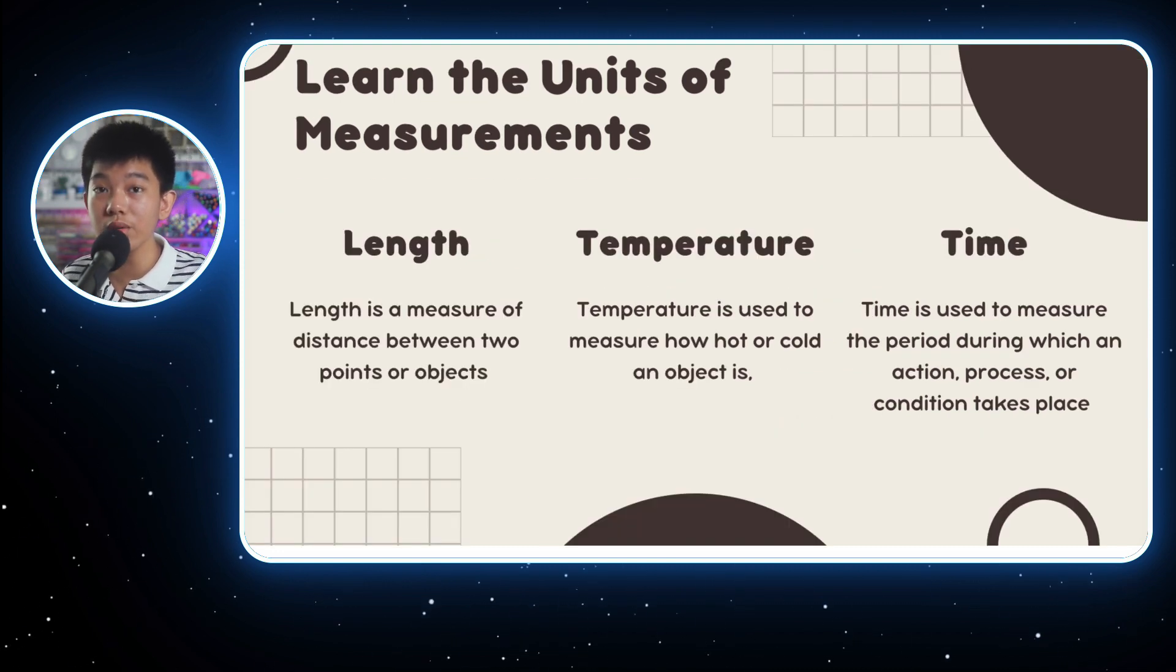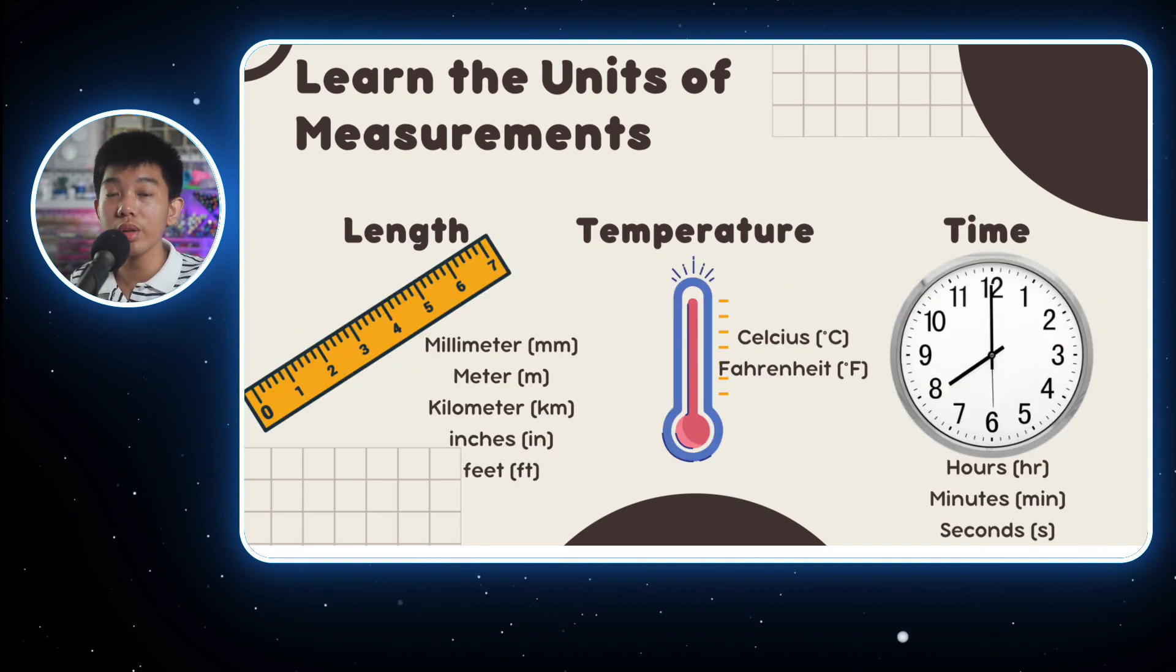Next, let's learn the units of measurement, starting with length. Length measures the distance between one thing and another thing. Temperature measures how cold or hot an object is, and time is used to measure the period during which an action or process takes place. When measuring these, use items such as a ruler for length, which can measure in meters, kilometers, inches, and feet. Temperature, use a thermometer, which can measure degrees Celsius or Fahrenheit, and a clock for time to measure the minutes, hours, and seconds.